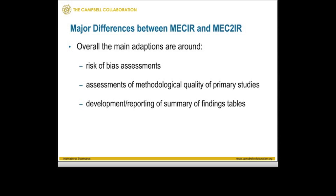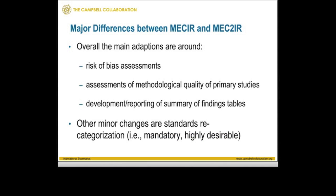You'll also notice some adaptations around the development and reporting of summary of findings tables, recognizing that many Campbell Collaboration reviews may include tens if not hundreds of studies. We added some additional flexibility in reporting standards. The remainder of the changes between the documents are quite minor — changing individual items from mandatory to highly desirable or vice versa. Overall, the standards are very similar and we only made slight modifications to allow for the wide range of methods seen in Campbell Collaboration systematic reviews.